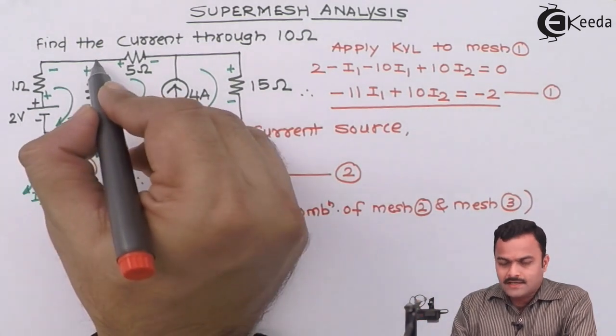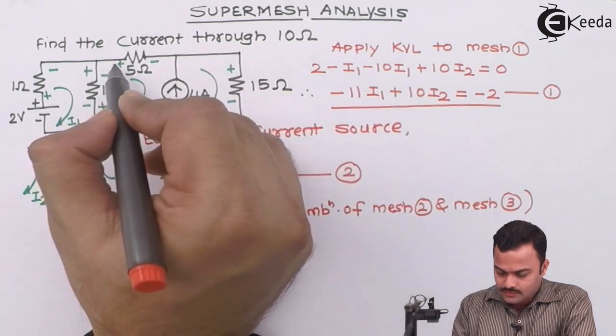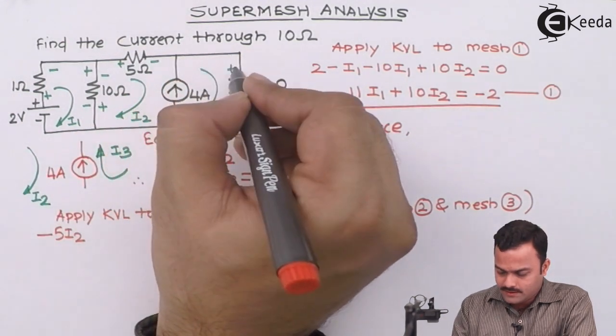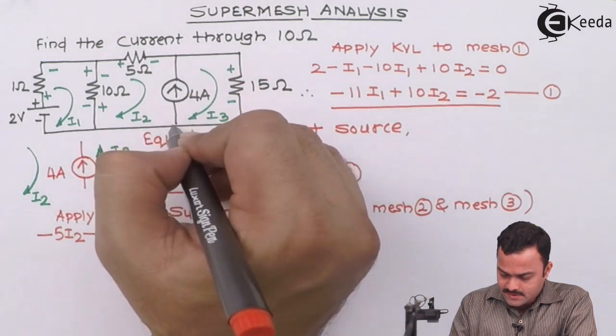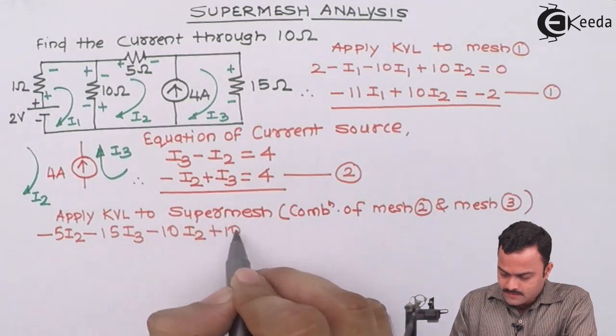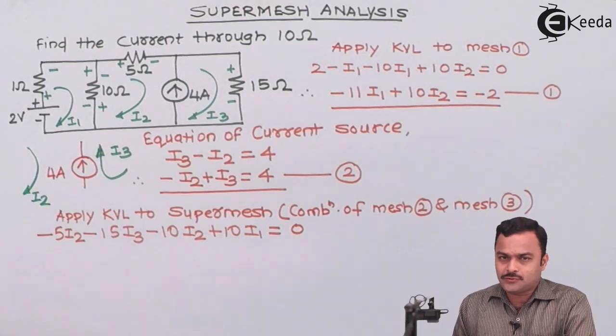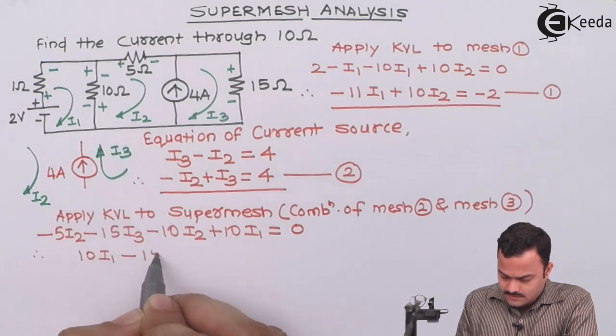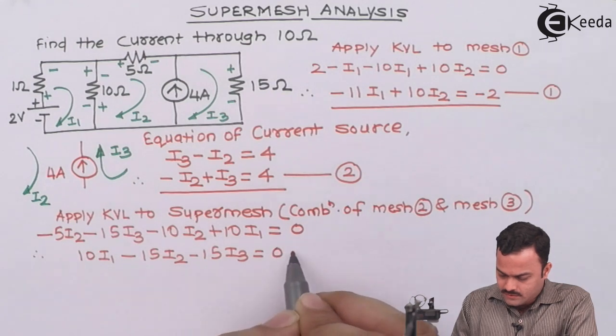So how to apply? We have to start just like a KVL to mesh 2 and wherever there is a current source, we need to bypass that part and go ahead to the next mesh. So plus minus minus 5I2. Over here, I have to bypass this part and go ahead. So if I go ahead, it will be plus minus minus 15 and this is because of I3. Then we have to bypass this. Go ahead, plus minus minus 10I2 minus plus plus 10I1 equal to 0. So what we have done simply we have bypassed that part of a circuit where current source is present. So after simplifying will get 10I1 minus 15I2 minus 15I3 equal to 0 as equation number 3.